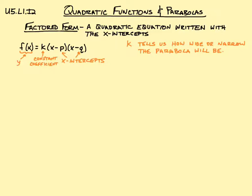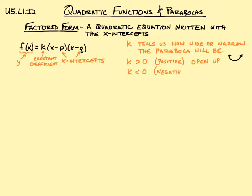Another thing k tells us: if k is greater than zero, meaning it's a positive number, then the parabola will open upwards — like a smiley face. If k is less than zero, which is a negative number, then it's going to open downward — a frowny face. Positive people smile, negative people frown.